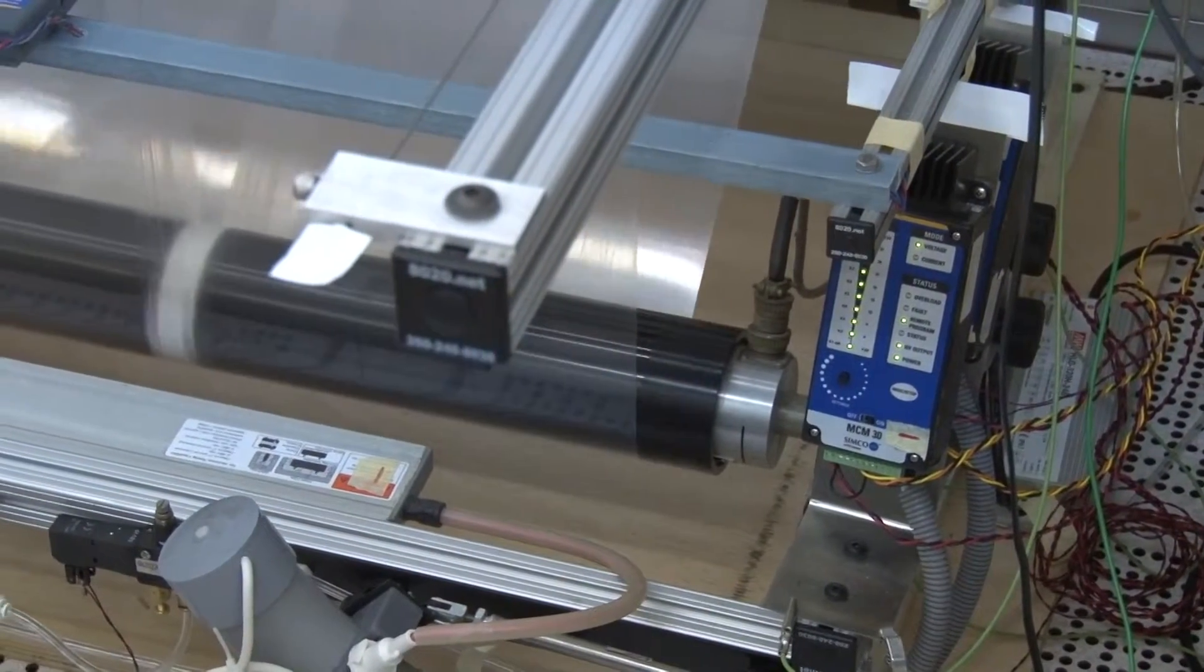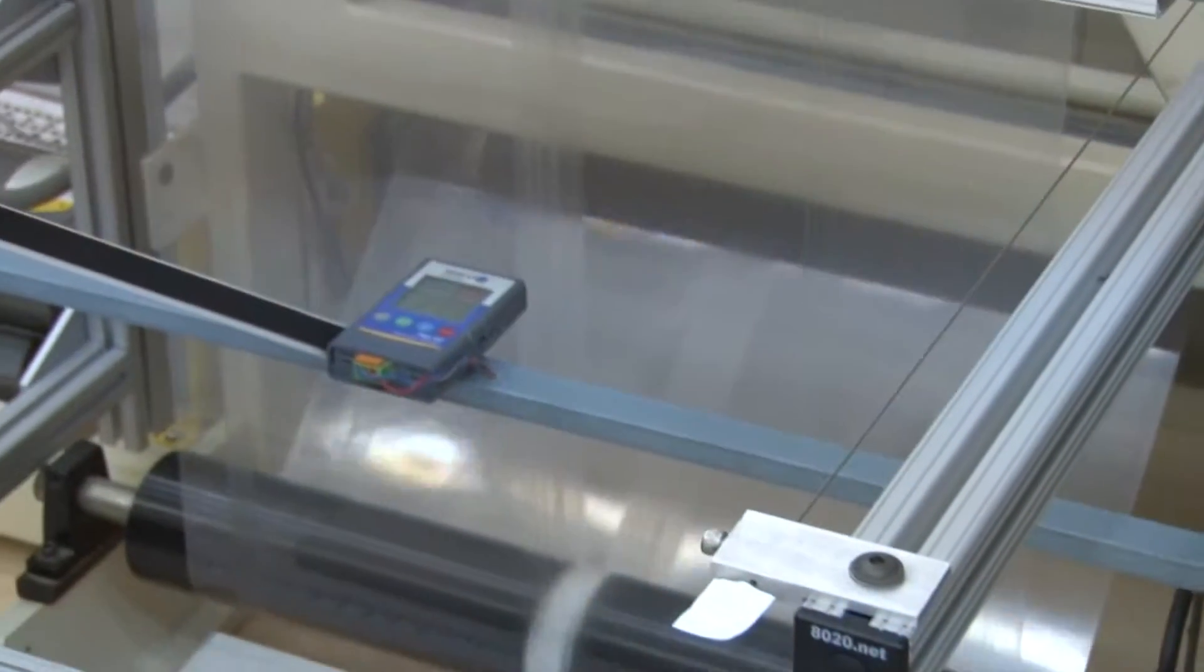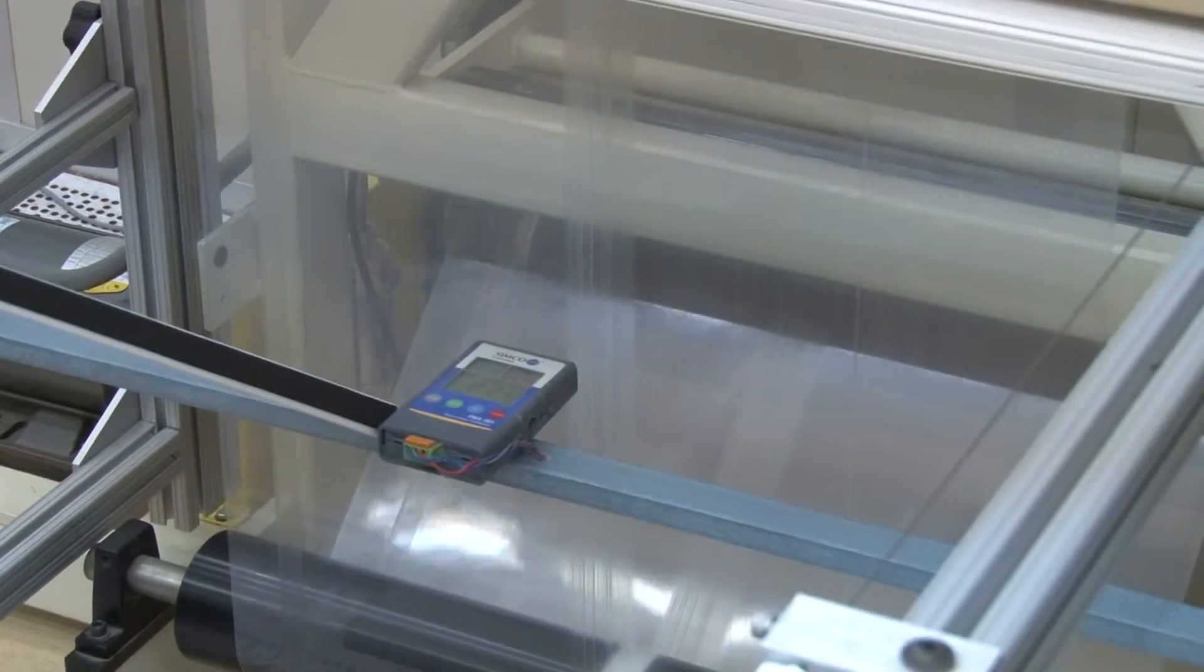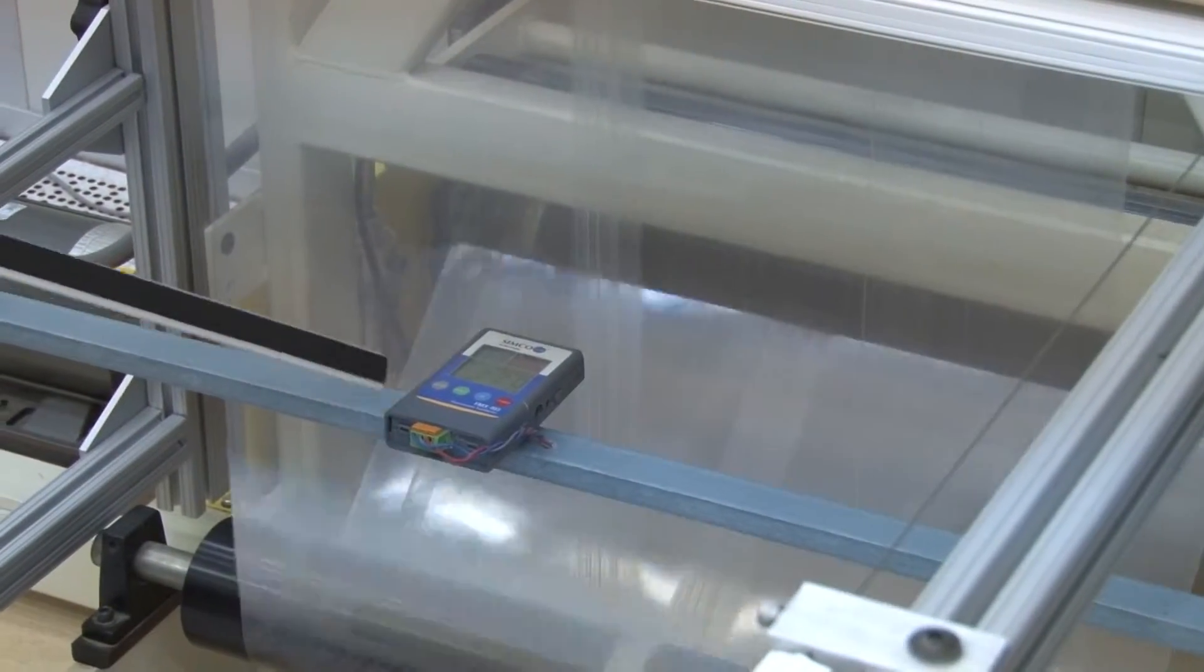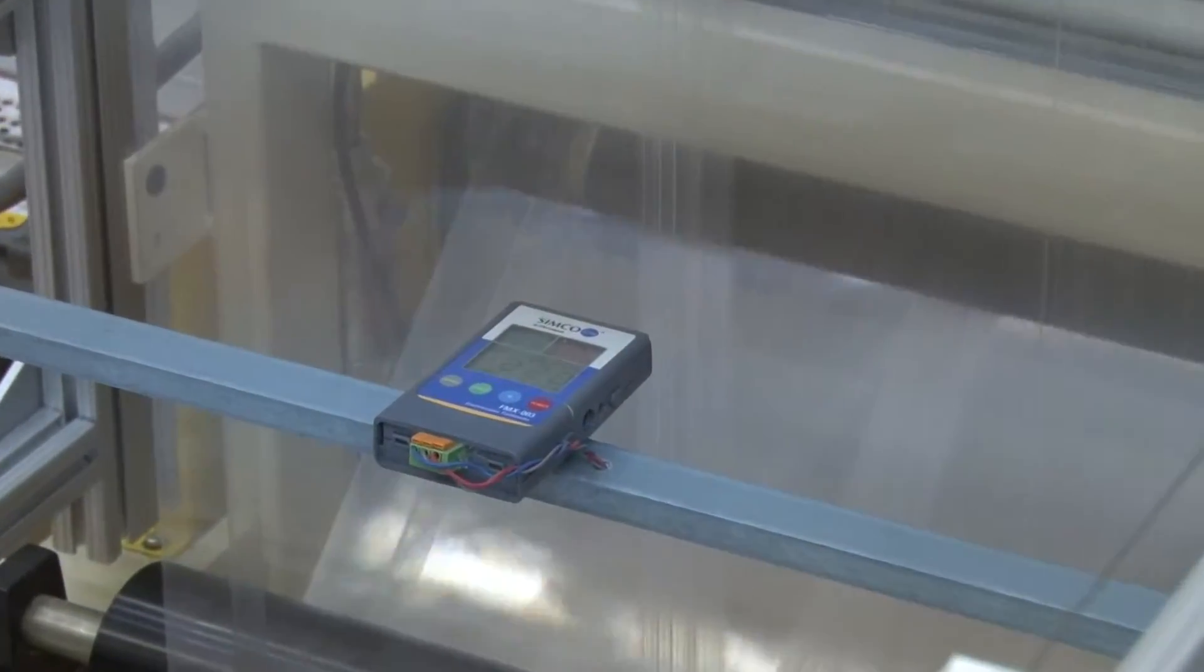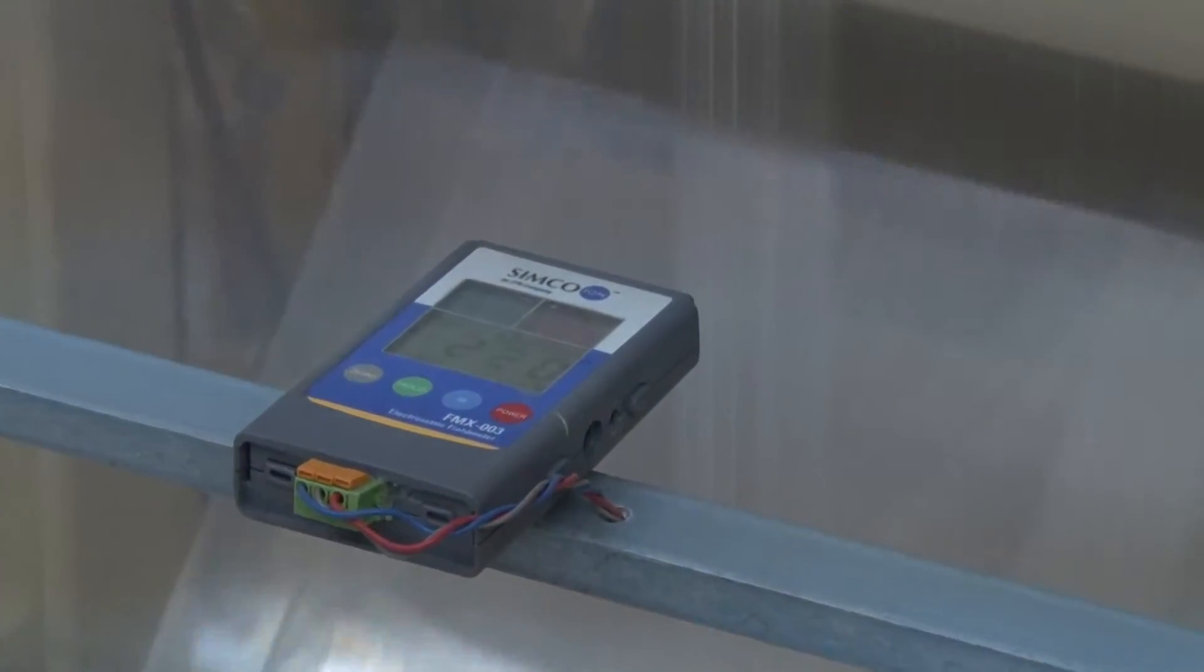Downstream from that, we have a modified FMX meter which allows us to measure the applied charge to the material, and we actually control the charge level with that reading.